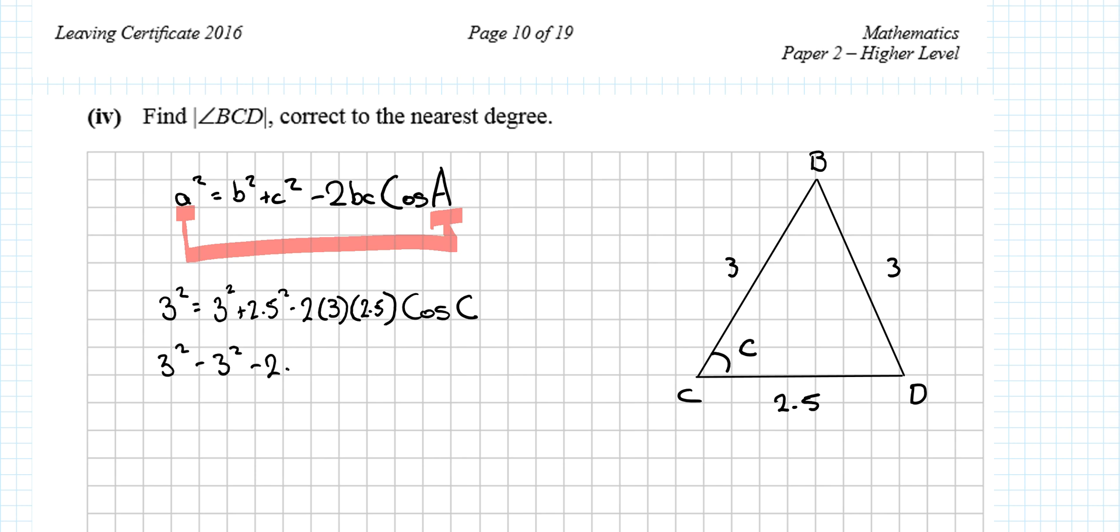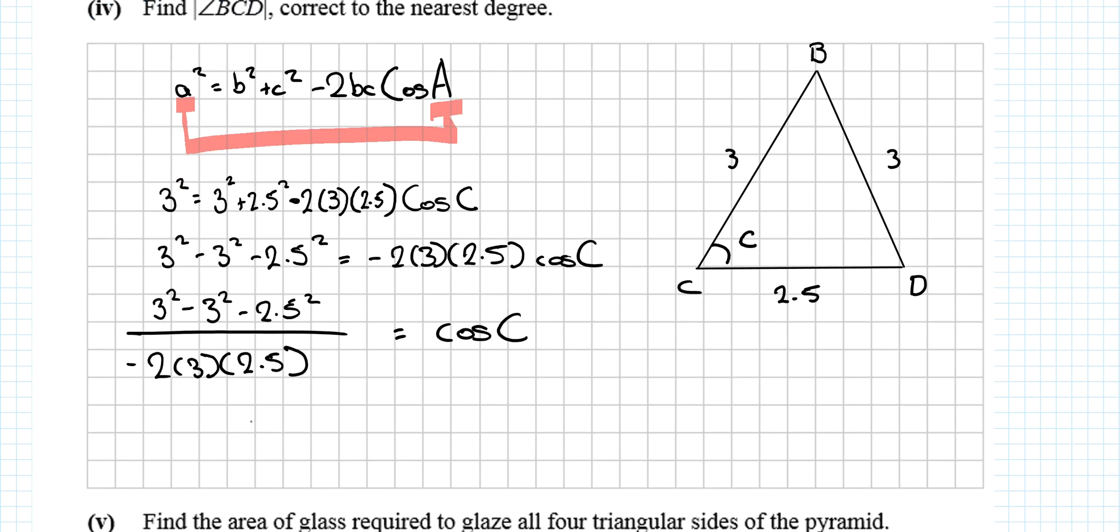So 3 squared equals 3 squared plus 2.5 squared minus 2 by 3 by 2.5 cos c. Now it's manipulation: 3 squared minus 3 squared minus 2.5 squared equals minus 2 by 3 by 2.5 cos c. Don't add - leave it here. They're connected by multiplication, so disconnect via division. You'd get cos c equals 5 over 12. Then c equals cos inverse 5 over 12, which is 65 degrees. BCD equals 65 degrees.